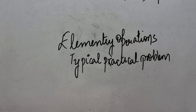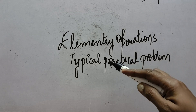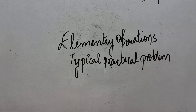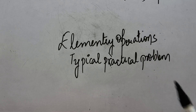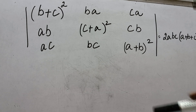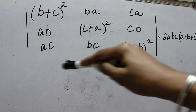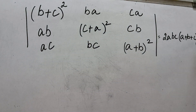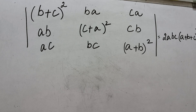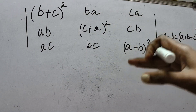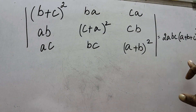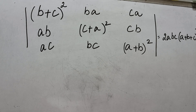Hello students. In this video we will discuss the practical question of elementary operations, which has also come in the university examination. In this practical question, you have been given a determinant and we have to prove it equal to 2abc(a+b+c)³. We have to apply various elementary operations according to the requirement and we will reach at this conclusion. Let us start all the steps one by one.